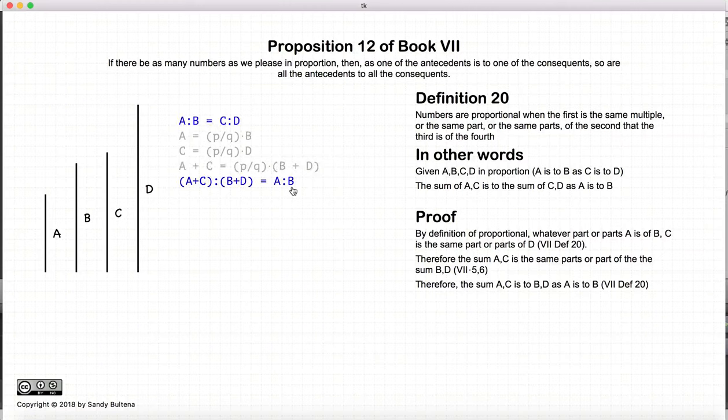So to summarize, a, b, c, d are in proportion. You add a and c together and b and d together, and they are in the same proportion. And that's it for this proof.